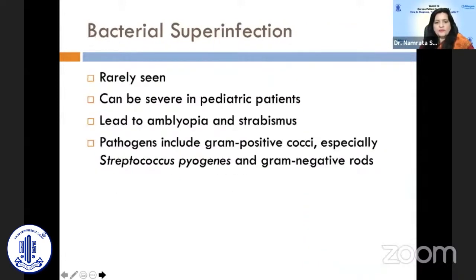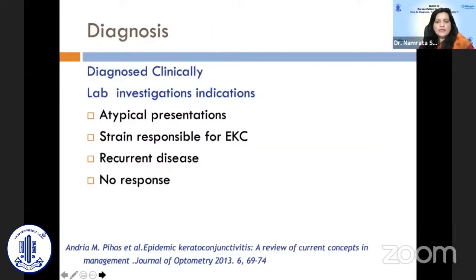Bacterial superinfection can occur, though it is rarely seen and more common in children, potentially leading to amblyopia and strabismus. Common pathogens include gram-positive cocci, especially Streptococcus pyogenes, and gram-negative rods. These cases are generally diagnosed clinically, although lab investigations are indicated in atypical presentations.